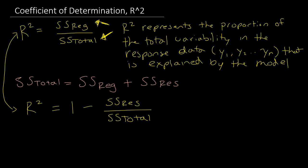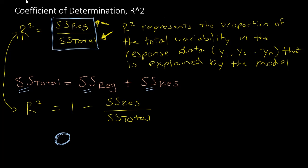It's important to know the limits of r-squared. The smallest number r-squared could possibly be is 0, because when you sum squared numbers the smallest result is 0. So the smallest r-squared could ever be is 0, which would happen when SS regression equals 0. Therefore r-squared must be greater than or equal to 0.